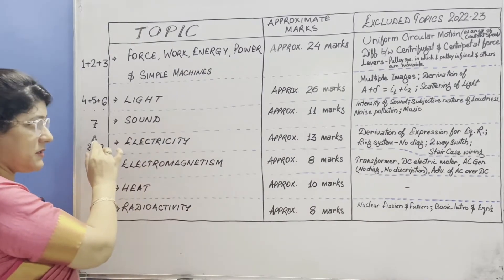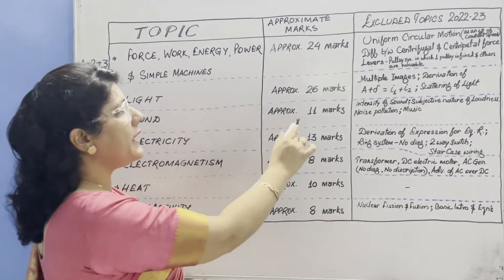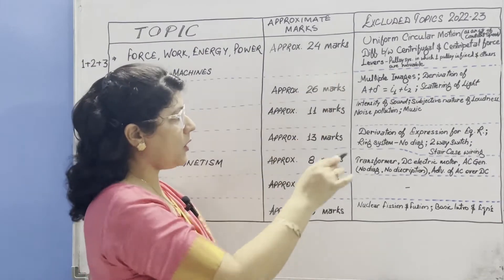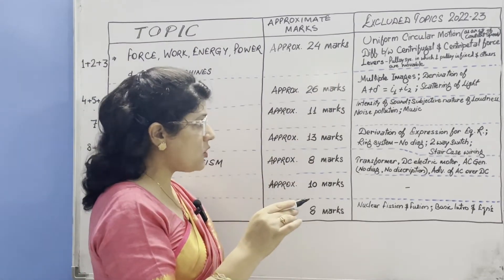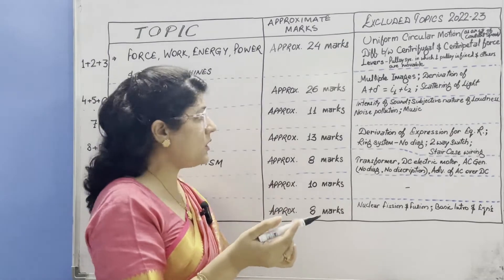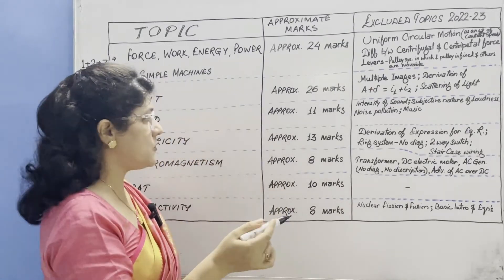Our next topic is sound which is chapter 7 carrying approximately 11 marks. Excluded topics are intensity of sound, subjective nature of loudness, noise pollution and music - difference between these two.